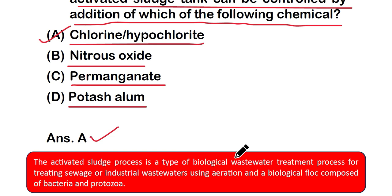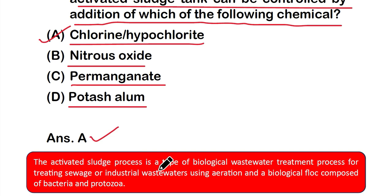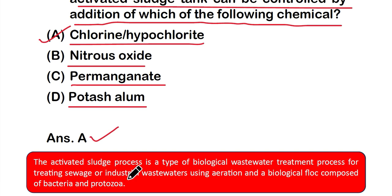The activated sludge process is a type of biological wastewater treatment process for treating sewage or industrial wastewaters using aeration and a biological floc composed of bacteria and protozoa.